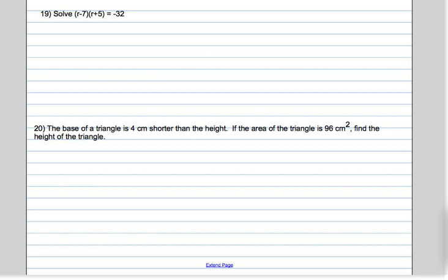Number 19, we have to FOIL first, then set everything on one side, make it equal to zero, factor and solve. So we're going to FOIL.